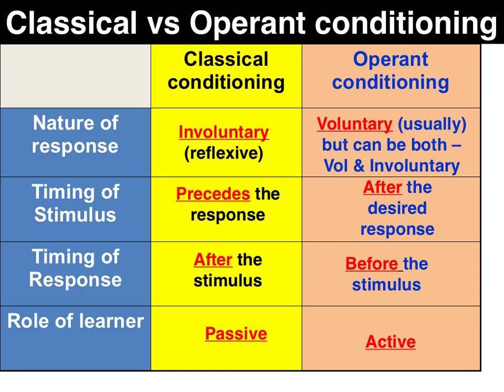In terms of timing of the stimulus, for classical conditioning the stimulus precedes the response, whereas for operant conditioning the stimulus is given after the response. In terms of the role of the learner, for classical conditioning the learner is passive, while for operant conditioning the learner is active.